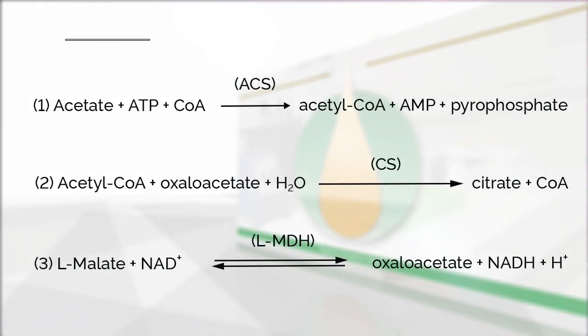The assay is specific for the measurement of acetic acid. The principle of the enzymatic reaction involved in the measurement of acetic acid is shown in this figure. The amount of NADH formed is stoichiometric with the amount of acetic acid in the sample. It is the NADH formation which is measured by an increase in absorbance at 340 nm.